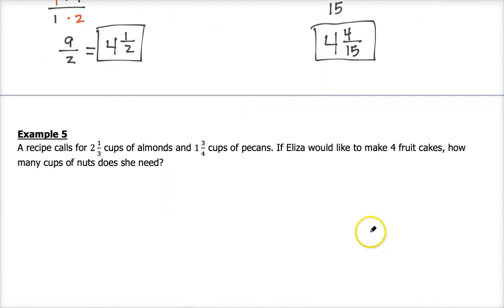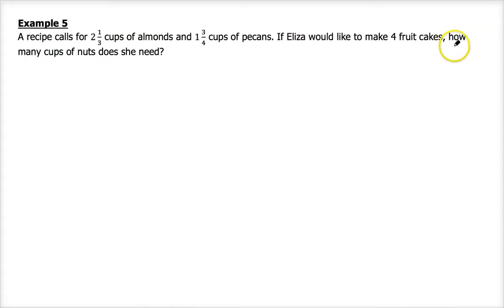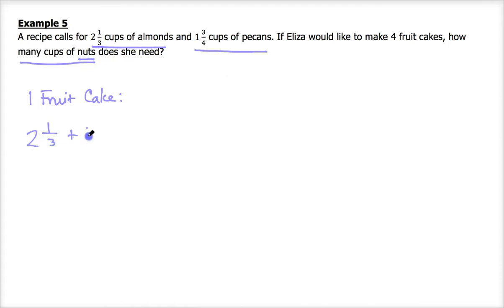Now we have a word problem on the back side. Number five says a recipe calls for two and one third cups of almonds and one and three fourths cups of pecans. If Eliza would like to make four fruit cakes, how many cups of nuts does she need? The question asks for total cups of nuts, not almonds or pecans separately. So the first thing we need to do is figure out how many total cups of nuts it takes to make one fruit cake by adding: two and one third plus one and three fourths.